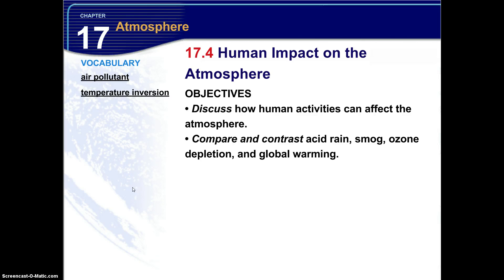We like to start section 17.4 with a key idea: human activities affect the atmosphere by producing air pollutants and other substances that contribute to problems such as acid rain and ozone depletion. There are two objectives for this section: discuss how human impacts can affect the atmosphere, and compare and contrast acid rain, smog, ozone depletion, and global warming.